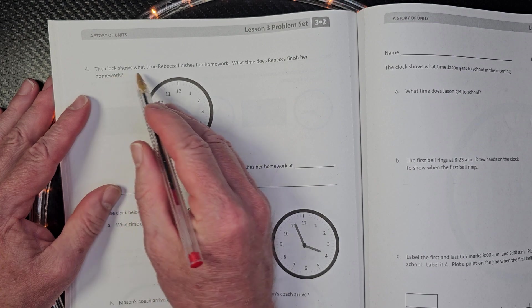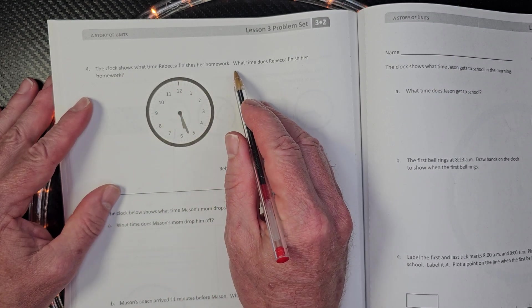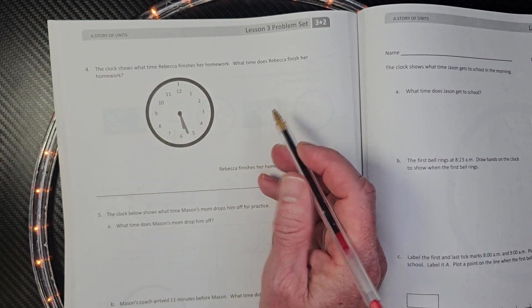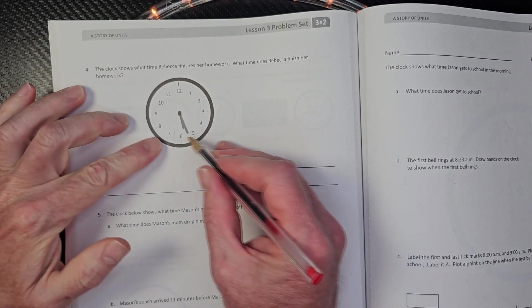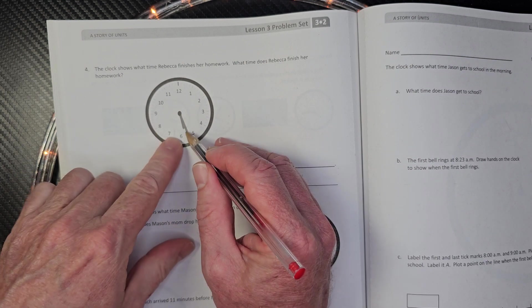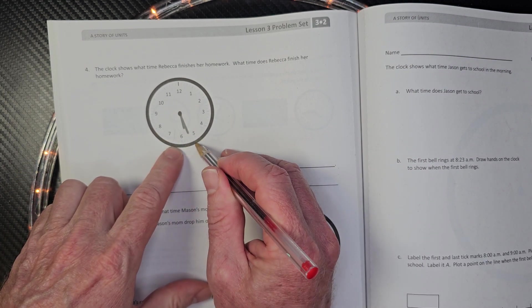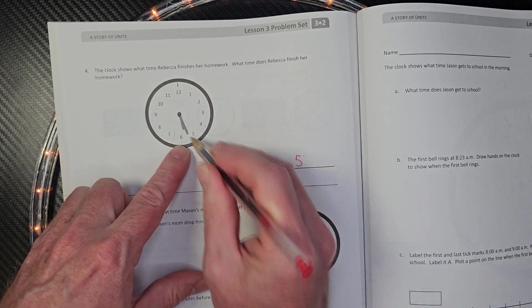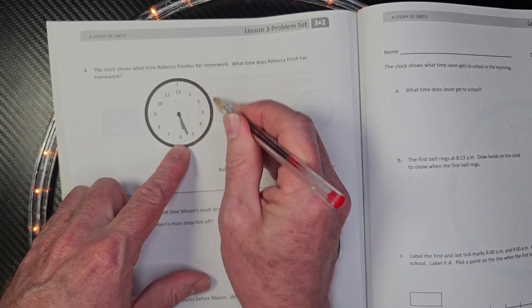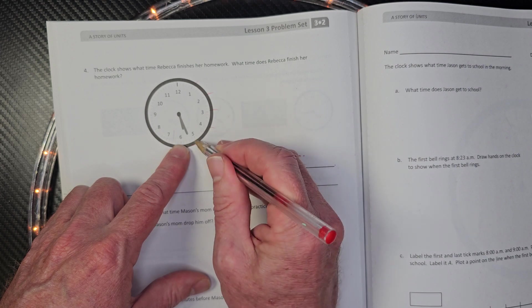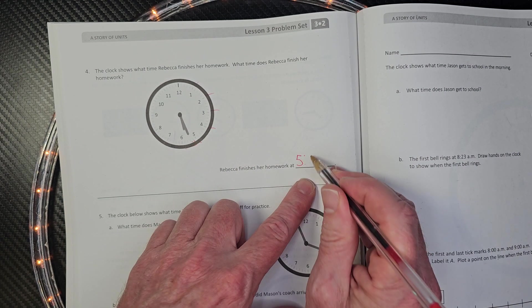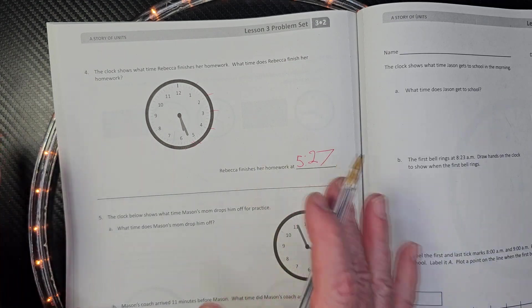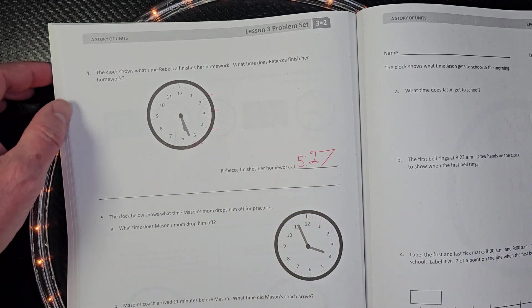The clock shows what time Rebecca finishes her homework. What time does Rebecca finish her homework? Excuse me. Lady hand, where's that in between the five and the six? So it's going to be five and then count this out. Five, 10, 15, 20, 25, 26, 27. And also, if please go ahead and pause the video at any time, do this on your own and then check this with me. We're almost done. All right.